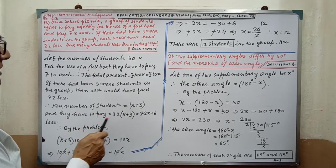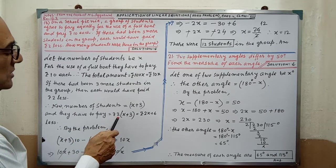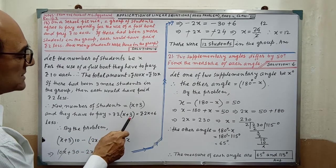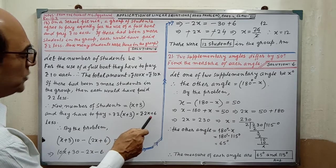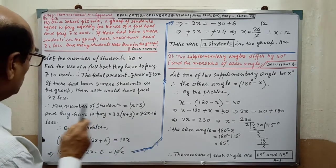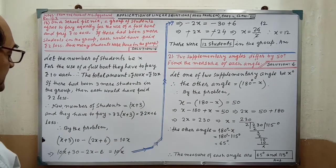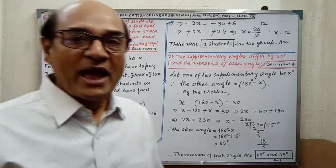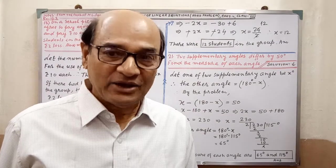And they have to pay rupees 2 into x plus 3 equal to 2x plus 6, they have to pay this amount less. Now we have to form the equation.